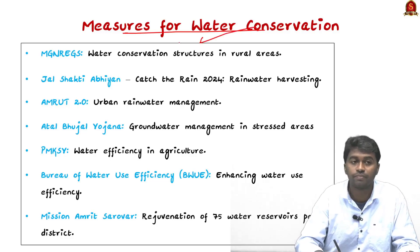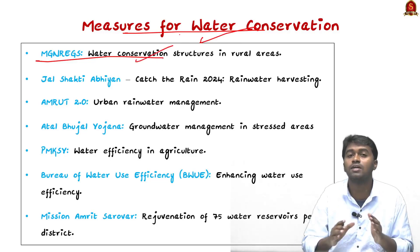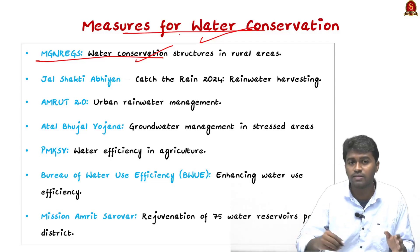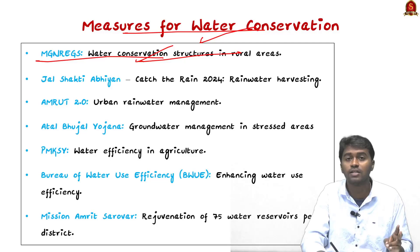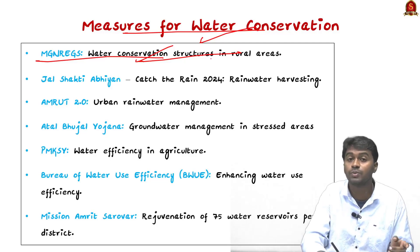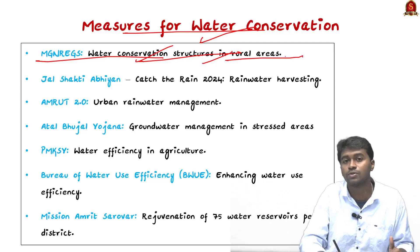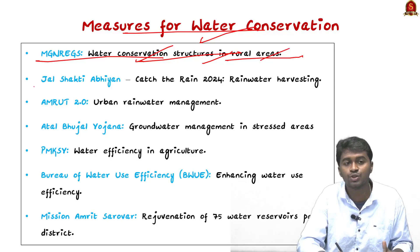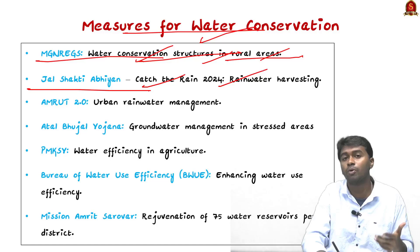Now let's look at government measures for water conservation. First, the Mahatma Gandhi National Rural Employment Guarantee Act guarantees 100 days of jobs to the rural unemployed, which includes conservation of local dams, canals, and irrigation systems, as well as regeneration and restructuring of water conservation structures in rural areas.